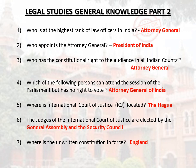Where is the International Court of Justice (ICJ) located? The Hague. The judges of the International Court of Justice are elected by the General Assembly and the Security Council.